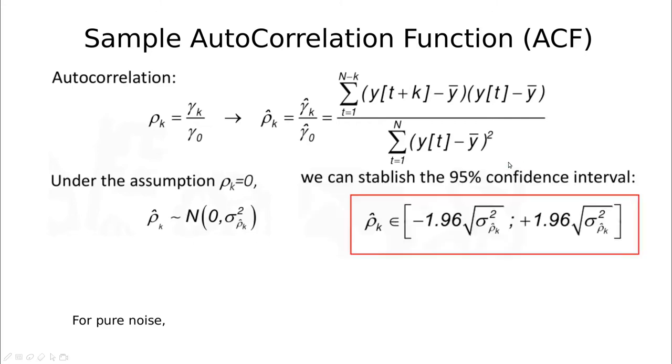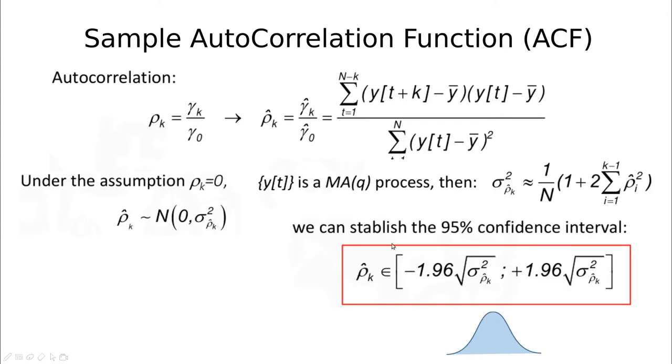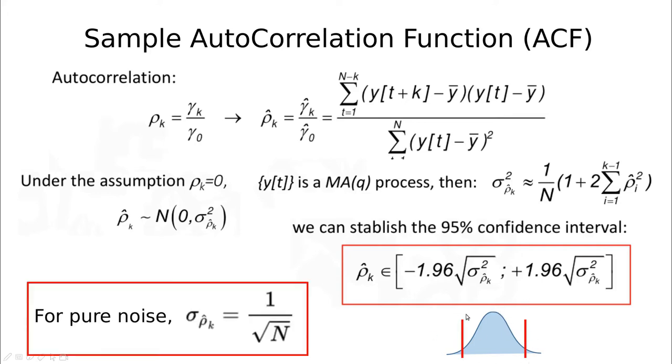The idea is that with 99% confidence interval, if the noise is Gaussian, it's a normal distribution, then you can tell this probability is going to be between minus almost minus two the standard deviation plus two the standard deviation. So if you assume the residuals are Gaussian, you can compute and have an idea of how large this is. In this case, for pure noise, this is simply 1 divided by the square root of n.